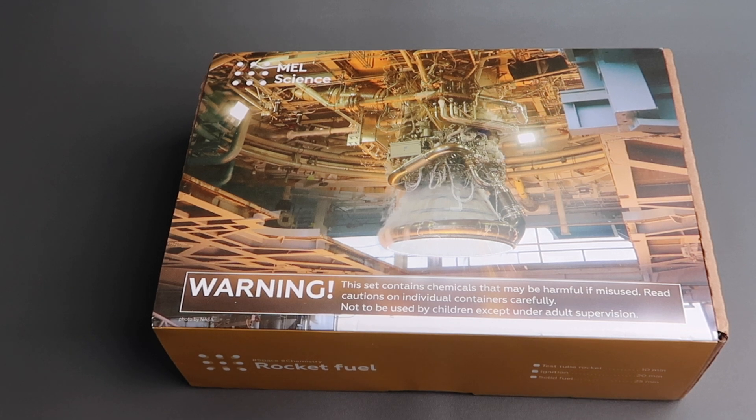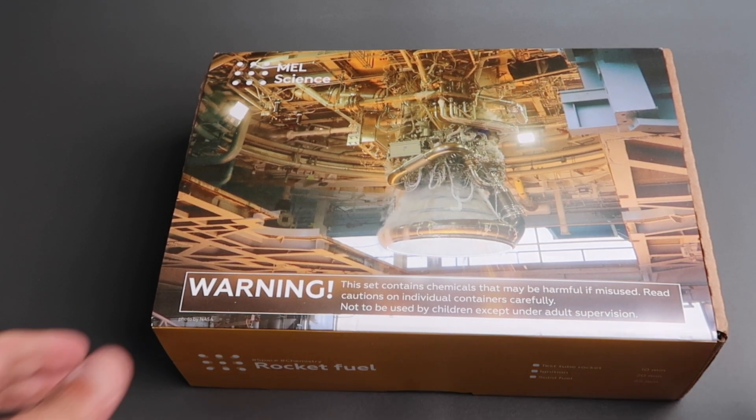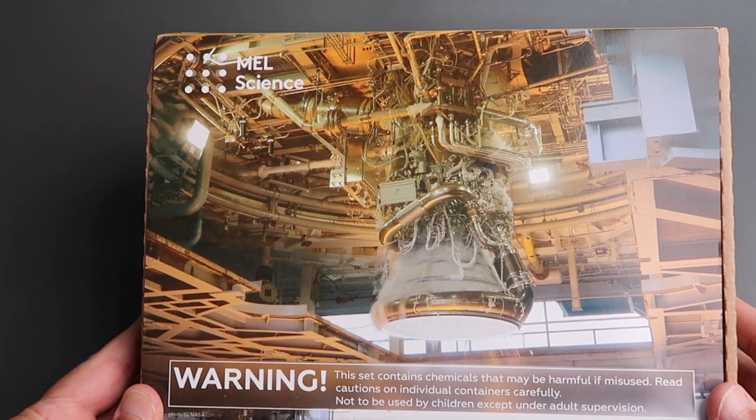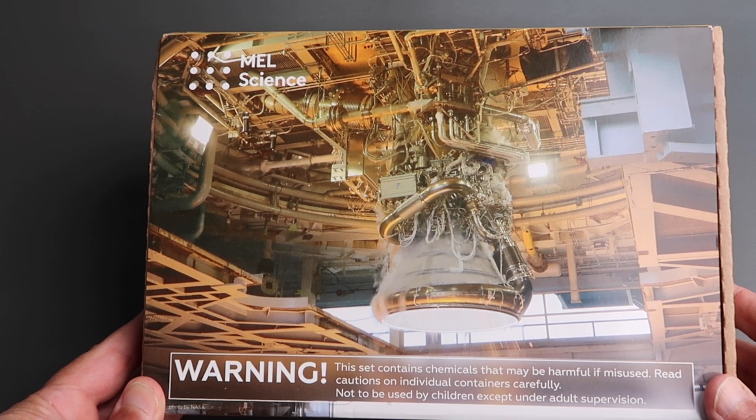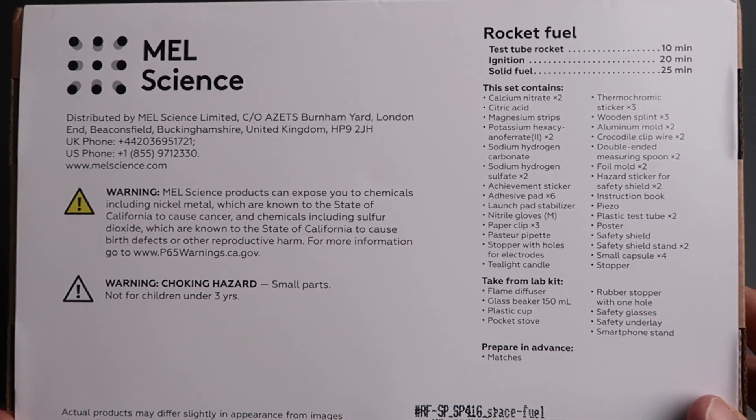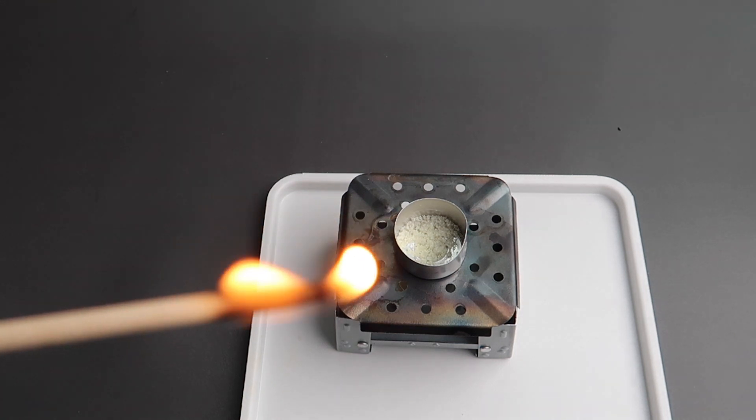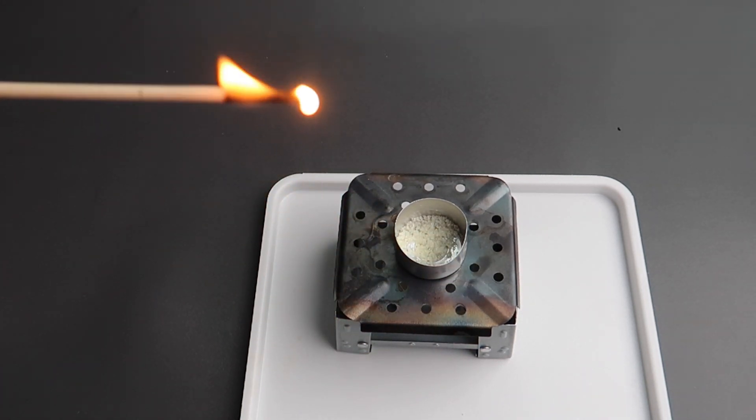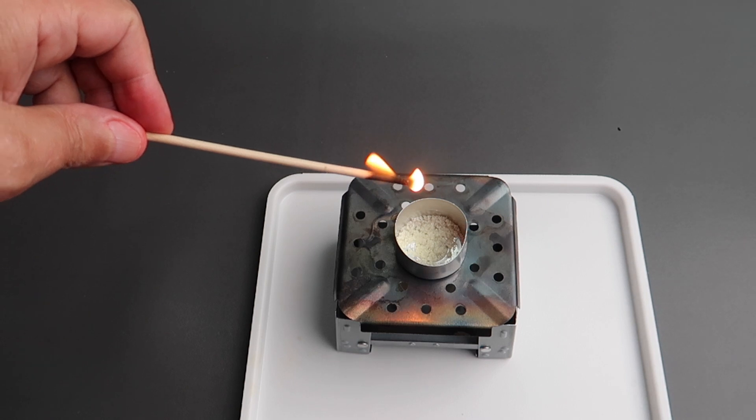I think this is one of the cooler of the Mel Science kits. Who doesn't love launching rockets right? I think you can have a lot of fun running these kits with your experiments. And you'll notice that in the firing experiments the test tubes can go right across the room. Mine did. Bounced off the far wall.